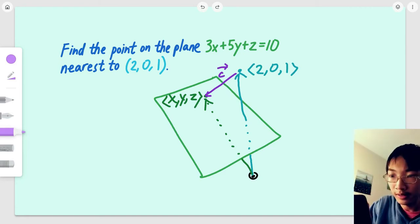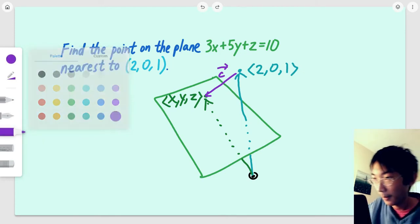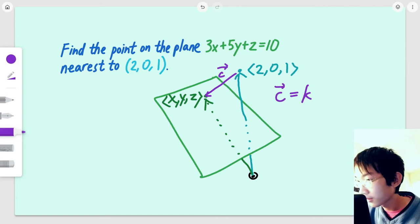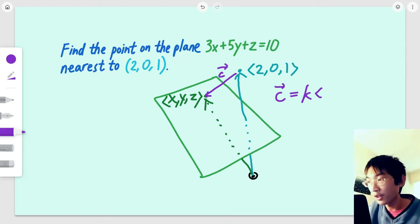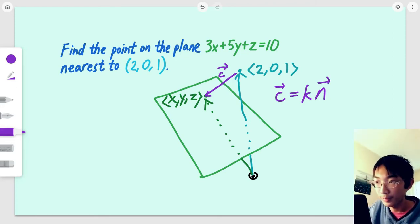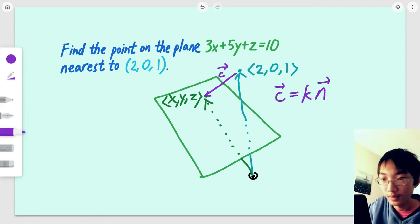So, how do you find what this normal vector is? Well, being a normal vector, it must be some multiple, let's say k for a multiple, of another normal vector to the plane. So, if we can find out another normal vector to the plane, we will be able to know what the direction of c is. Now, how do we do that?